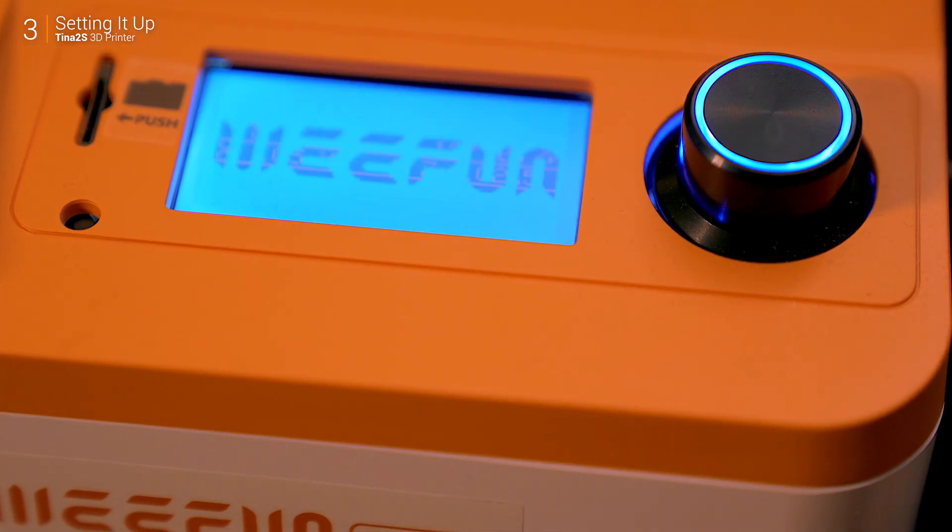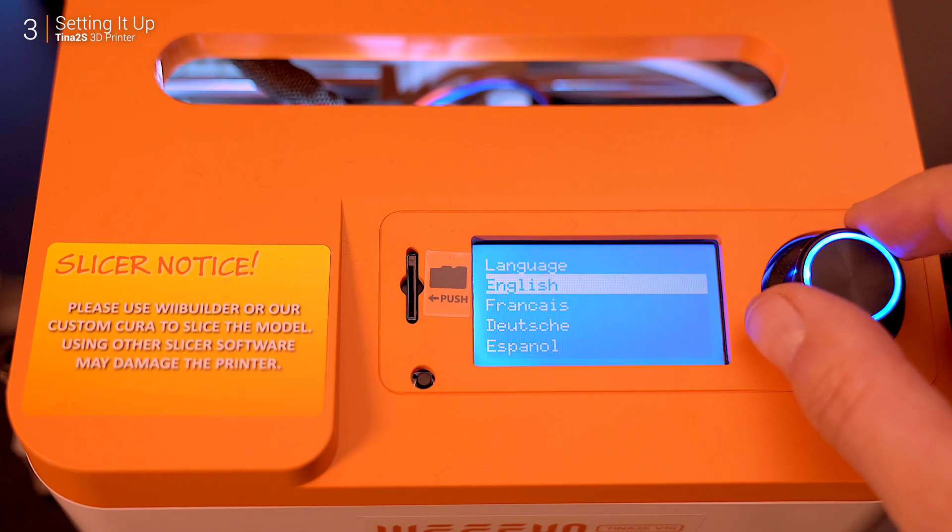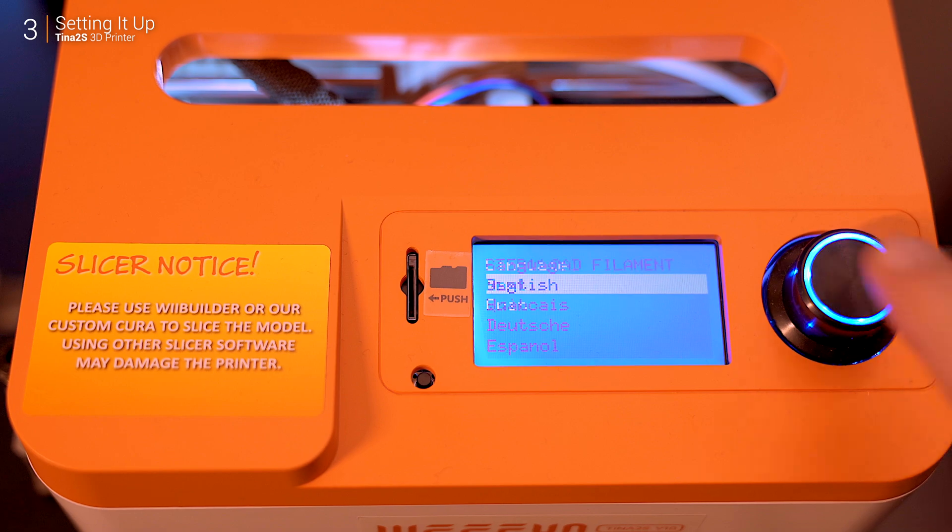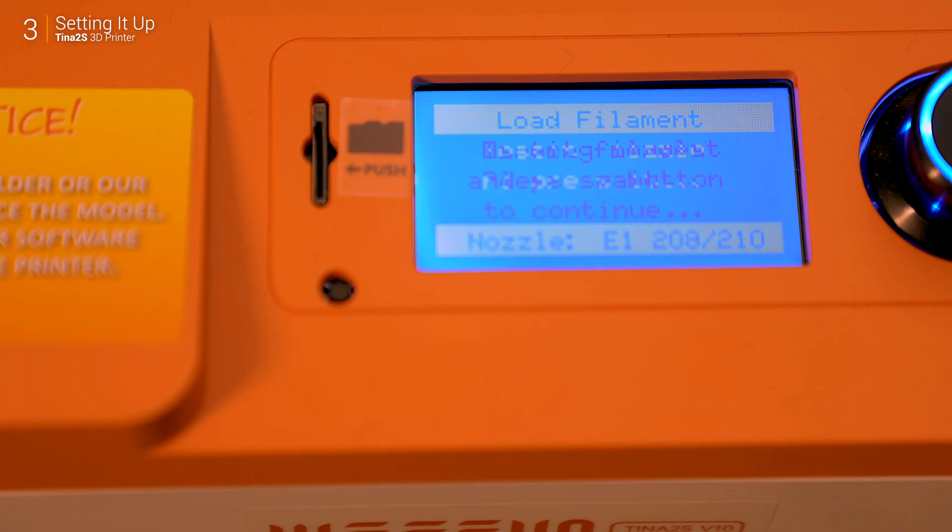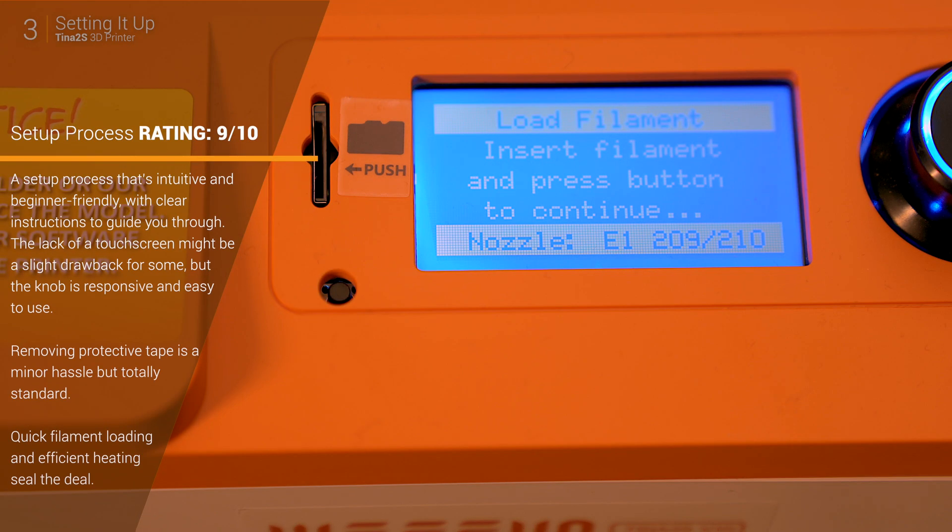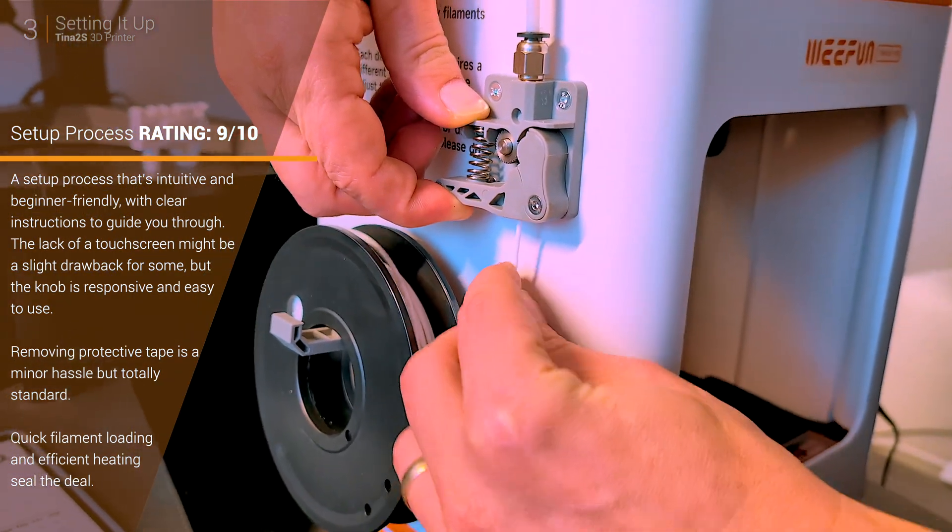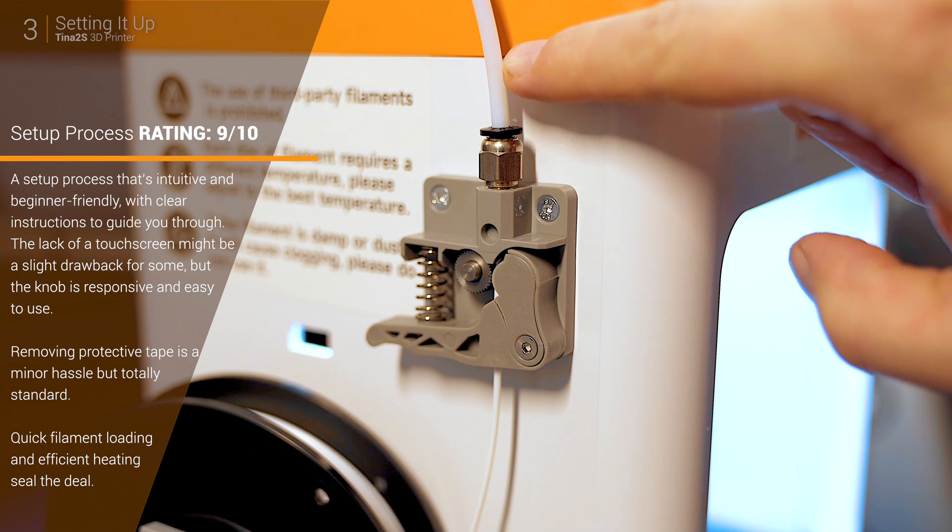Once powered on, navigate the control knob to load filament. The extruder heats up to 210 Celsius in just about 3 minutes, which is fast enough to keep things moving. Feed the filament into the tube and the printer takes over from there. Done and dusted.